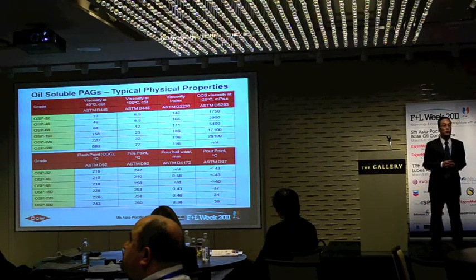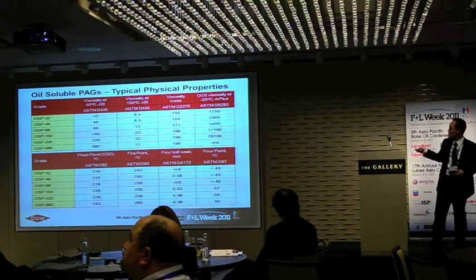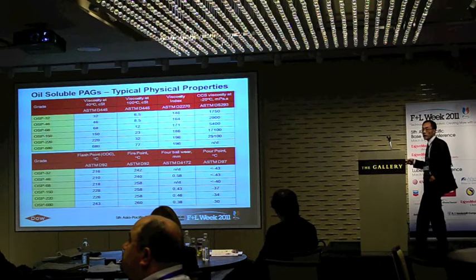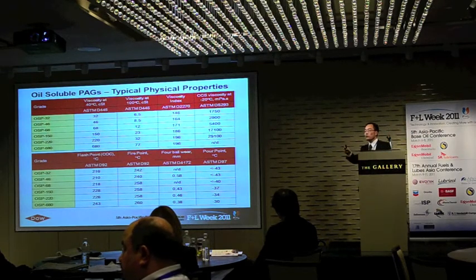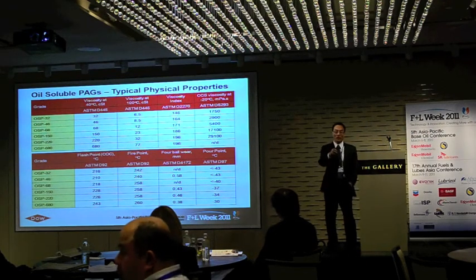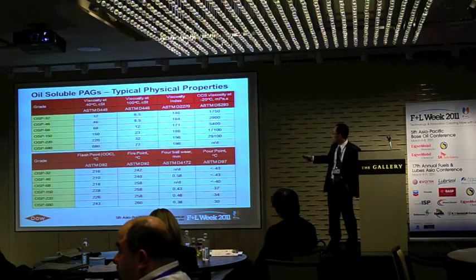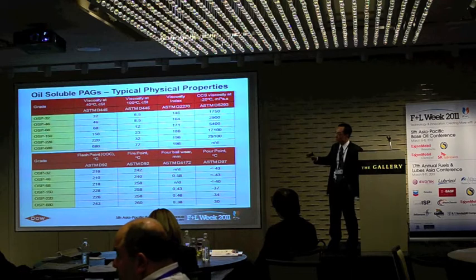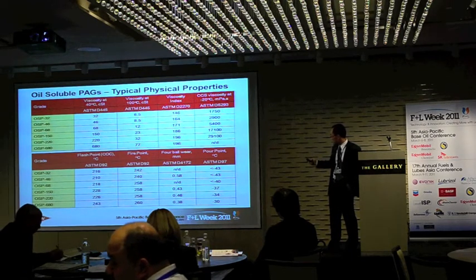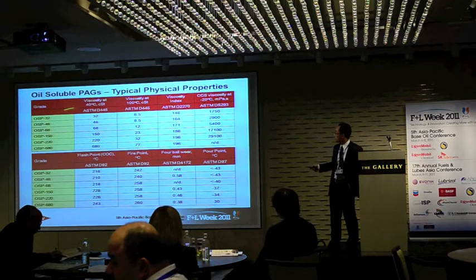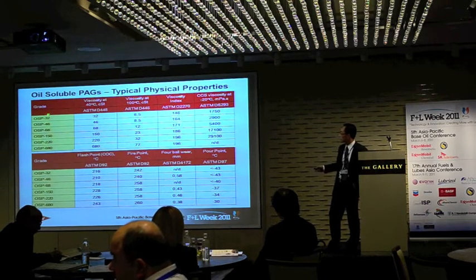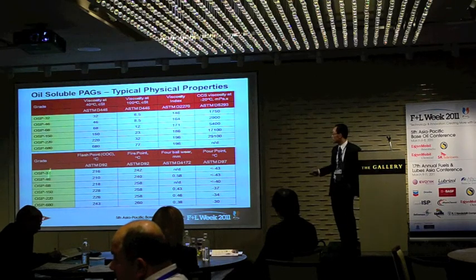You can also do the utilization with the BO cap. So by changing from EO, PO, to BO, you basically change from a little bit hydrophilic to a more hydrophobic. By looking at the different customer needs, we designed a series of the OSP polymers, from viscosity 32 all the way to 680.